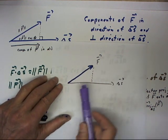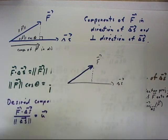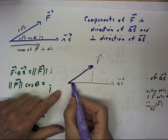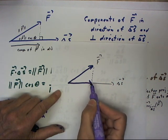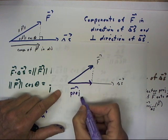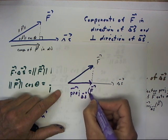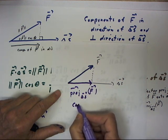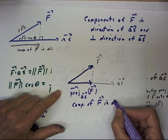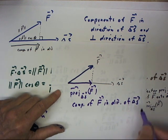Now, we have our vector f, we have our vector delta s, and we've projected f onto delta s, and we've obtained this projection, which is projection onto delta s of f, and this is the component of f in the direction of delta s.